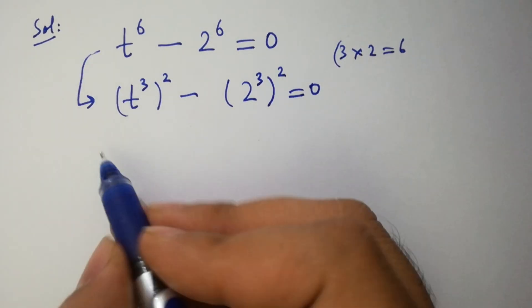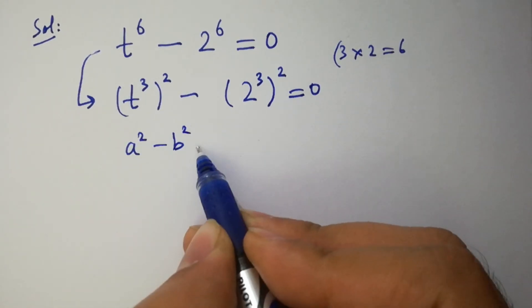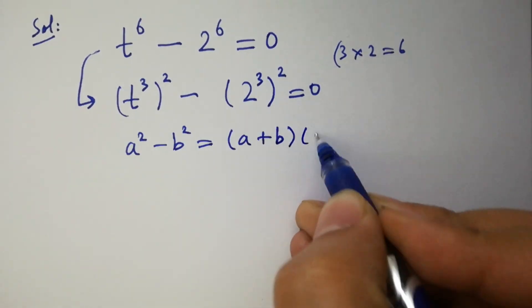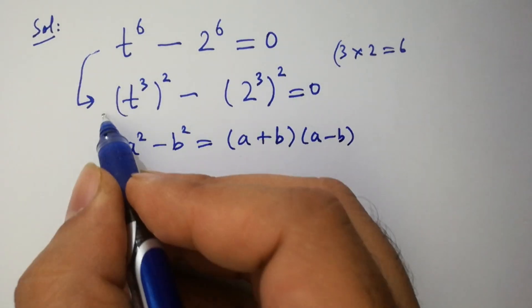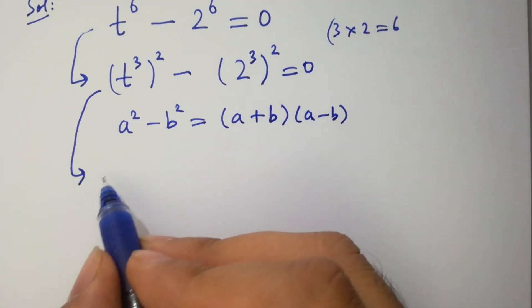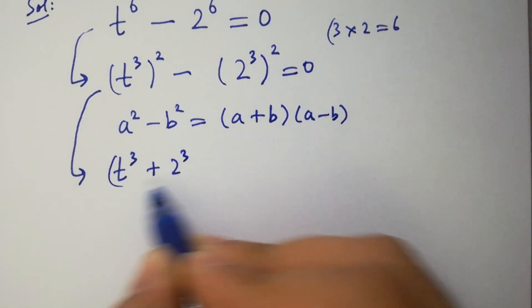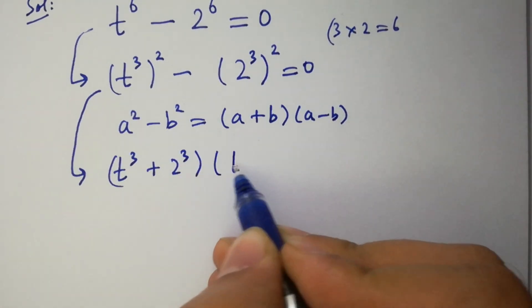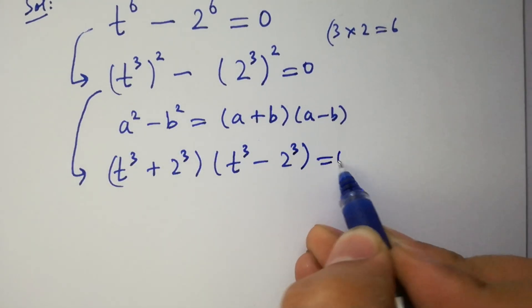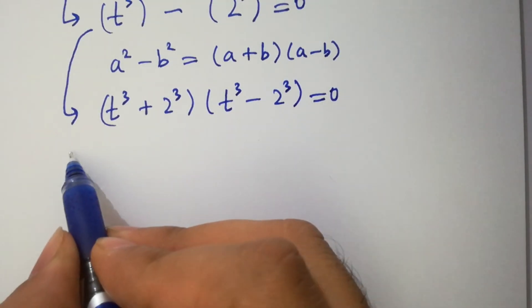As we know, a squared minus b squared equals (a + b)(a − b). Then we have (t³ + 2³)(t³ − 2³) equal to 0. We have two cases here.